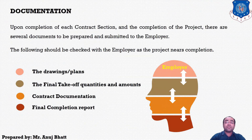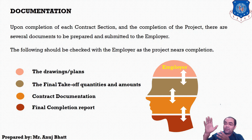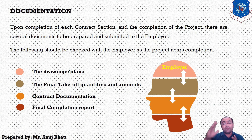After these, the documentation part comes. The contractor has to submit the final report to the higher authority. Upon the completion of each contract section and completion of the project, several documents have to be prepared and submitted to the employer. Those documents include drawings, quantity and amounts, contract documentation, final completion reports, etc. Although those final documents are to be submitted at the end of the contract section, they have to be prepared as work progresses and finalized when the works are near to completion. This is what constitutes the Quality Assurance Plan formation.